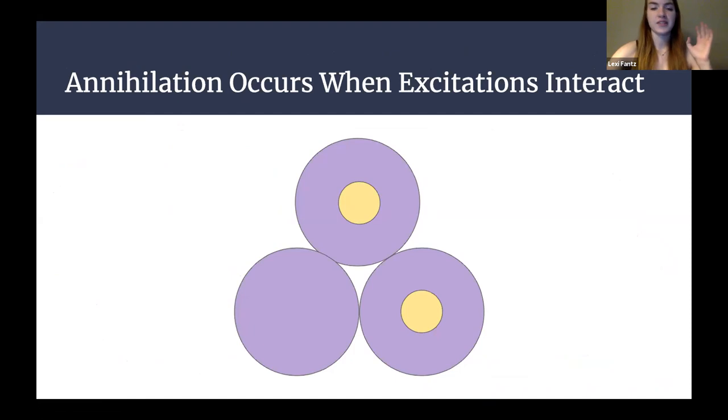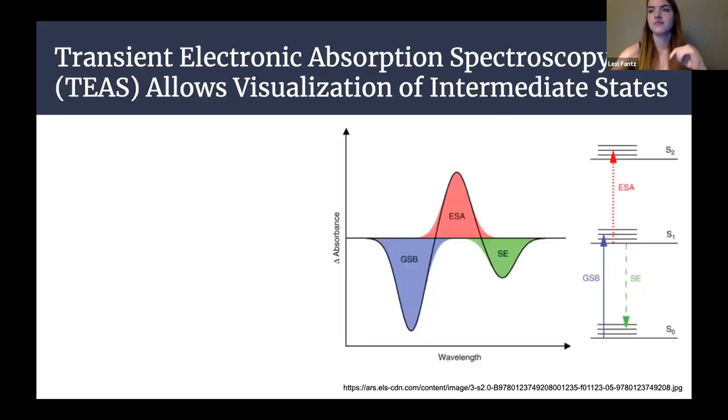Another thing that we looked at is annihilation. Annihilation is basically what occurs when two excitations run into each other. Here we have a photosystem one trimer with our two yellow dots which represent excitations. Say they were to both move to this bottom left monomer, they both jump there, we get a little pulse, and then one of them basically gets deleted and we only have one left when the other returns to the ground state. By looking at these annihilation rates especially at different powers we can determine a little bit more about what's happening in these photosystems.